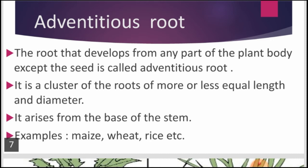The next type is adventitious or fibrous root. These are roots that develop from any part of the plant body except the seed. They grow shallow and spread over a larger area. They form a cluster of roots of more or less equal length and diameter, arising from the base of the stem. Examples include maize, wheat, and rice.